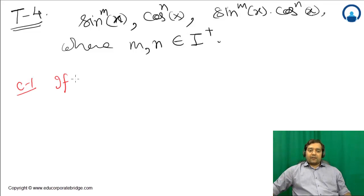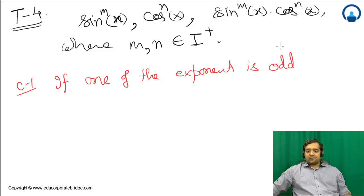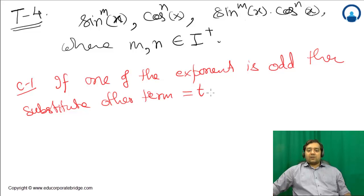Case 1: If one of the exponents is odd, then substitute the other term equals to t. If one of the exponents is odd, whether sin(x) or cos(x), if one has odd power, then substitute the other term equal to t.